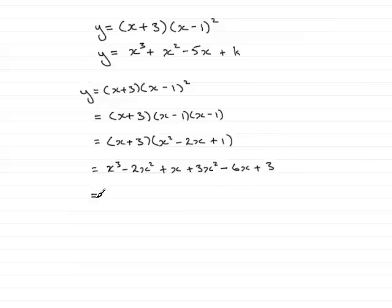Next I just want to group up terms so we've only got one x cubed term. As far as the x squareds go we've got these two so that's going to be minus 2x squared plus 3x squared which is x squared. As for the x terms we've got plus x and minus 6x that's minus 5x, and then lastly we have the constant here plus 3.